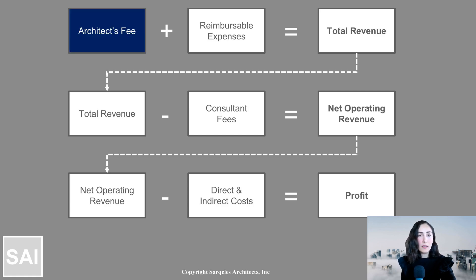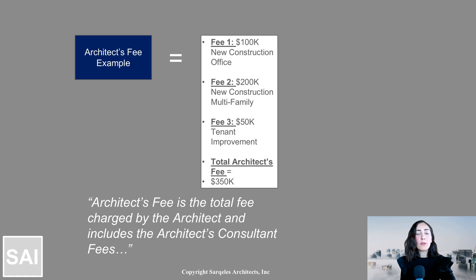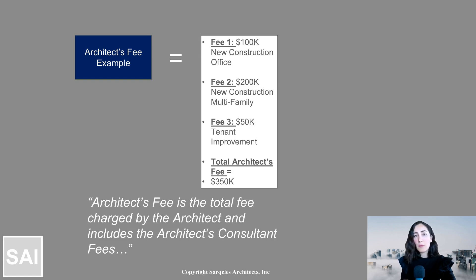We begin with the architect's fee — the total dollars or total fee that the architecture firm is going to charge clients to do their project. So let's say in month one, we have a fee of $100,000 for one project, then another fee of $200,000, and then we charge $50,000 for a third. That comes out to an architect's fee of $350,000 — that's the total fee for the architect.